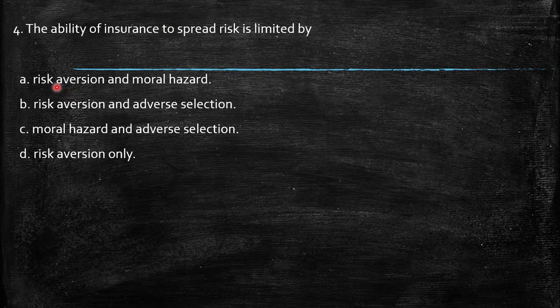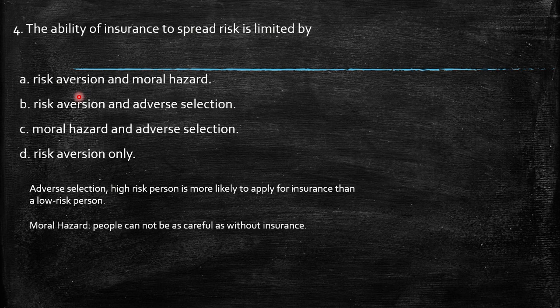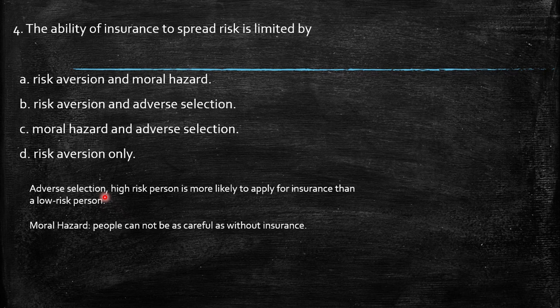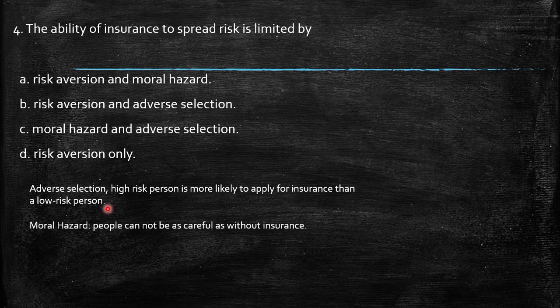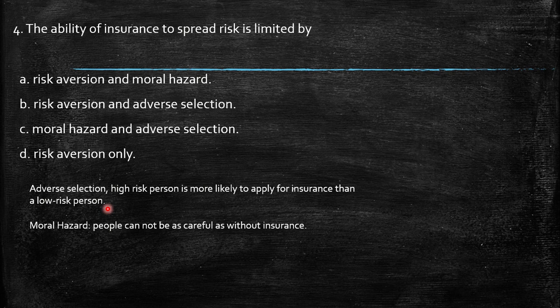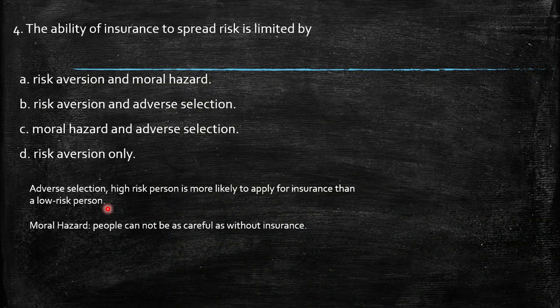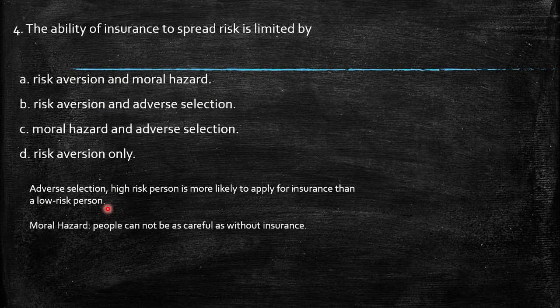The important concept here is adverse selection. Adverse selection means a high-risk person is more likely to apply for insurance than a low-risk person. Unfortunately, the insurance company cannot easily find if that person is risky. For example, in health insurance, people tempted to take it are people who know they may face a disease, and the insurance could cover that.